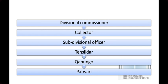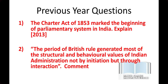The hierarchy in revenue administration went: Divisional Commissioner, then Collector, then Sub-Divisional Officer, then Tehsildar, then Kanungo, and then Patwari — the Patwari being at the village level. A previous year question asked: 'The Charter Act of 1853 marked the beginning of the parliamentary system in India — explain' (asked in 2013). Another question: 'The period of British rule generated most of the structural and behavioural values of Indian administration not by initiation but through interaction — comment on this.'